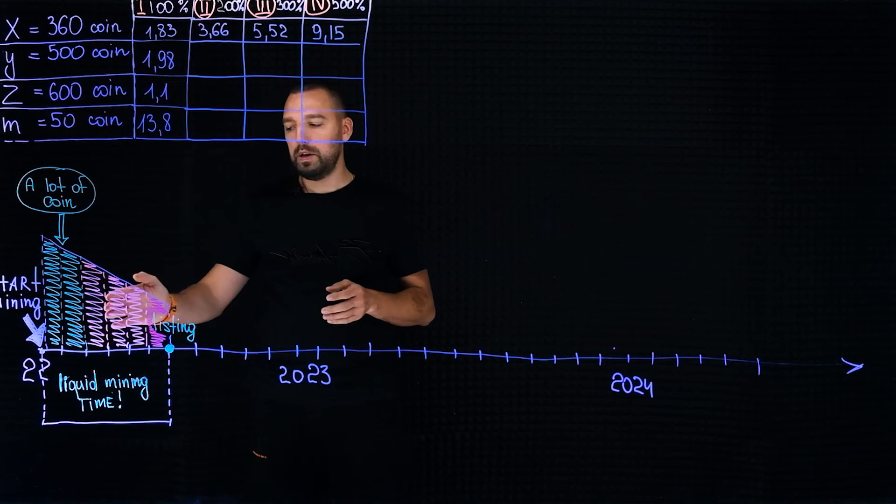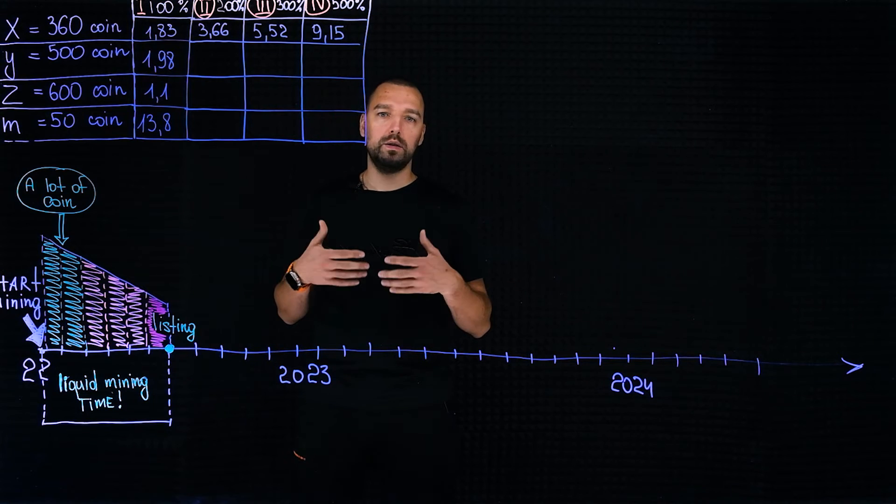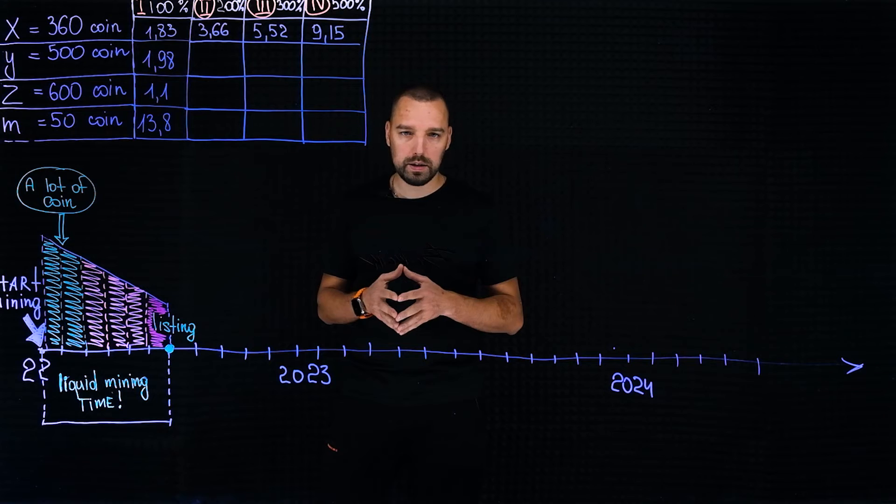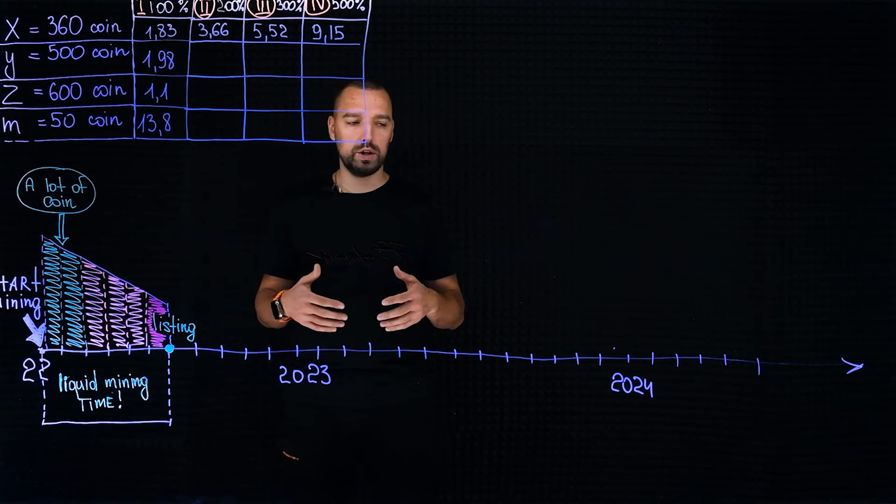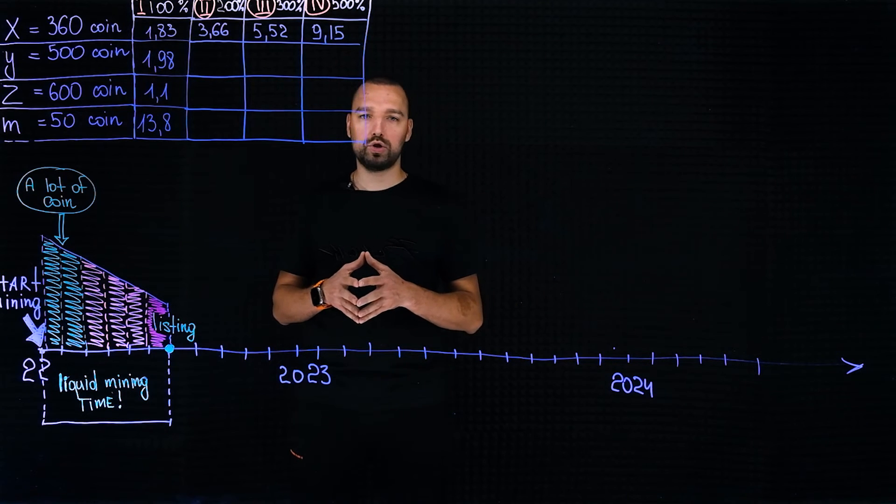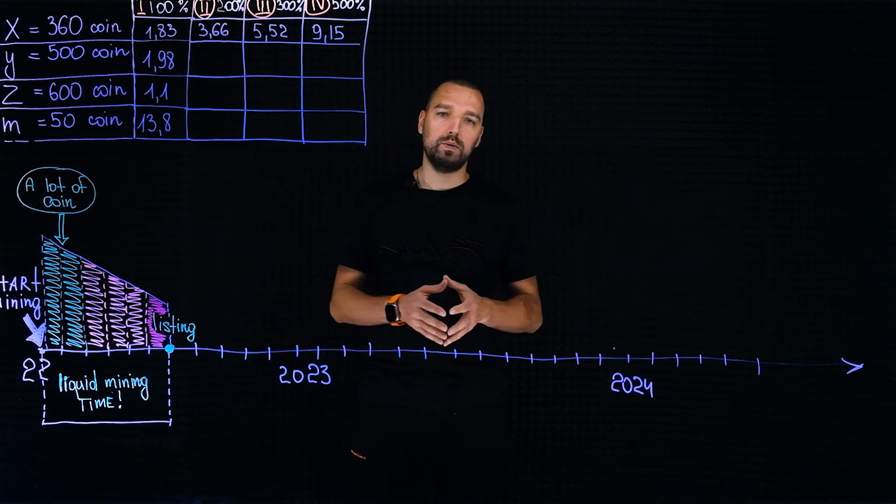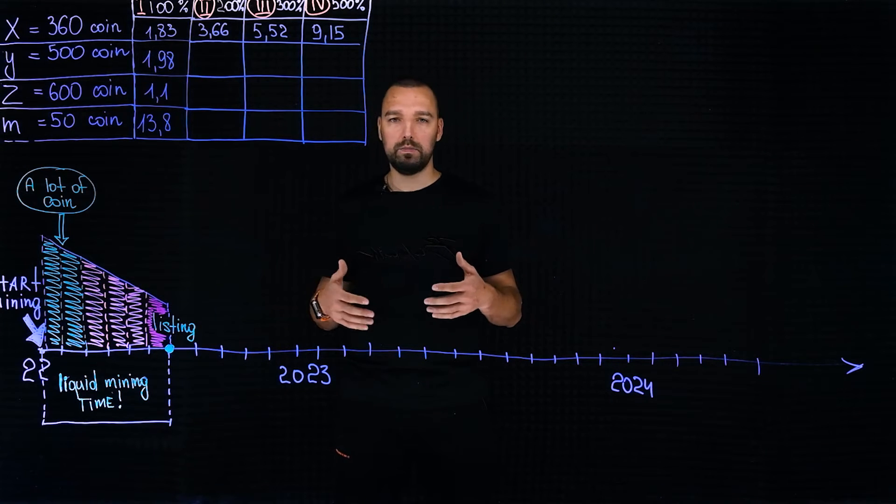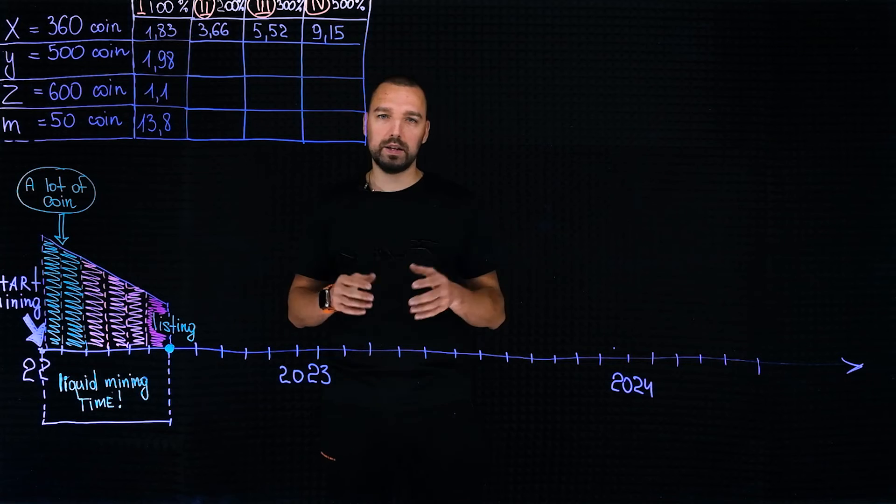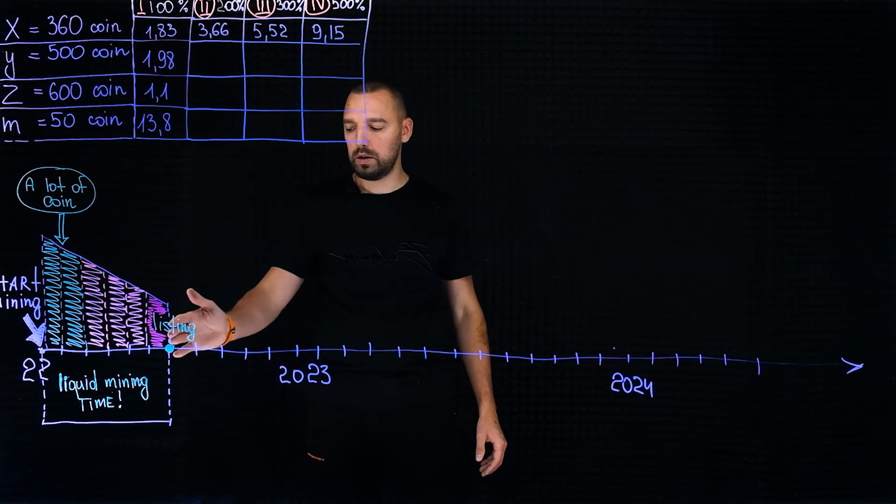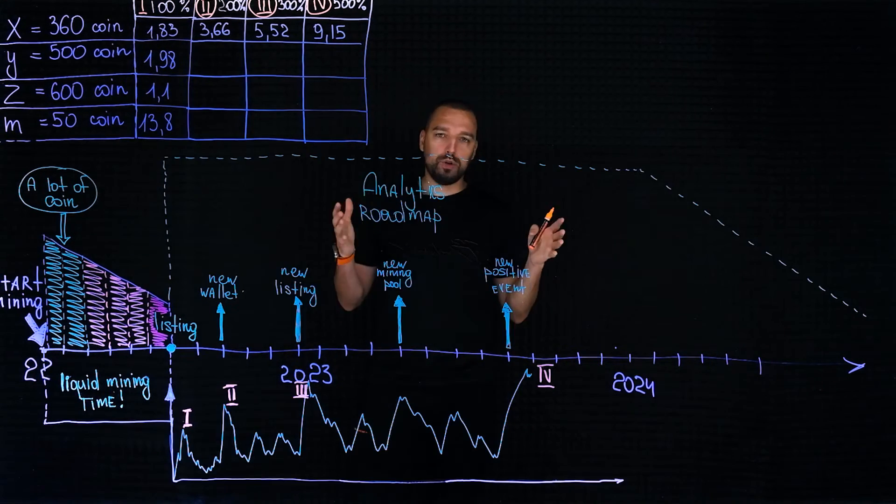Subsequently, as the number of miners in the network increases, the amount of monetization decreases. Well, immediately before the listing, of course, the number of miners is already maximum for the reason that there is already information that the project will develop further. Because as a rule, if the project goes on the stock exchange, then it develops further. Accordingly, the time of liquidation is exactly the period from the moment of inception to the listing itself.